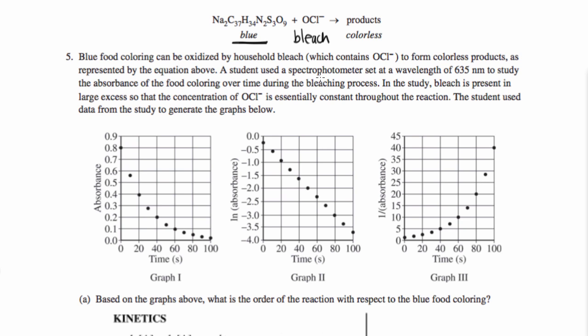A student used a spectrophotometer set at a wavelength of 625 nanometers to study the absorbance of the food coloring over time during the bleaching process. In the study, bleach is present in large excess, and I will underline that because that's important. It's present in large excess so that the concentration of hypochlorite is essentially constant throughout the reaction. The student used data from the study to generate the graphs below.